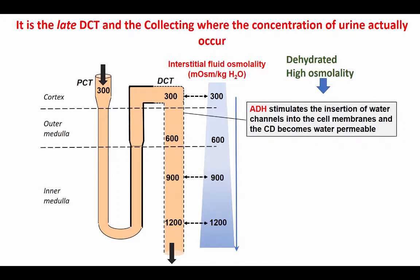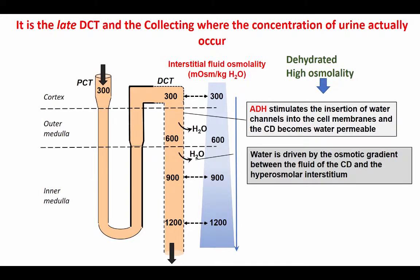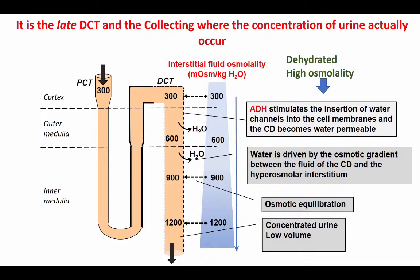ADH stimulates the insertion of water channels or aquaporins into the cell membranes, and the collecting duct becomes water permeable. Water is then driven by the osmotic gradient between the fluid of the collecting duct and the hyperosmolar interstitium, and this carries on until osmotic equilibrium has been reached. The end result is a urine which is concentrated and typically will have a very low volume.